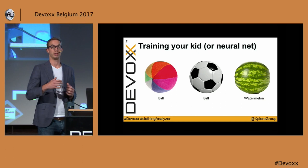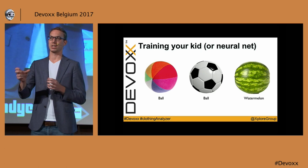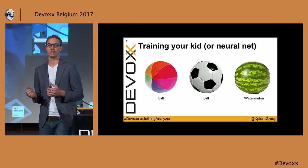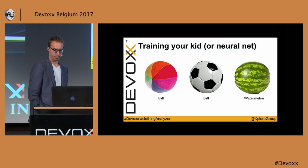We did the same thing for clothing. We gave a lot of images of clothing to our network and said: this is a t-shirt, this is a blazer, this is a suit. And in the end, our system was able to recognize clothing.